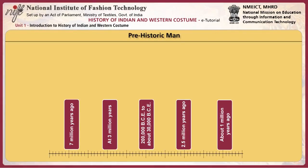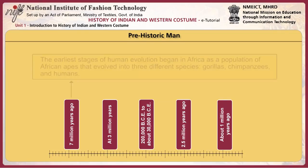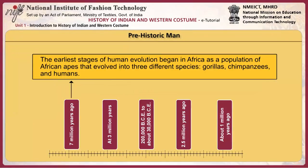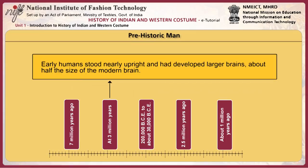Prehistoric man evolved over a period of 7 million years. The earliest stages of human evolution began in Africa as a population of African apes that evolved into three different species: gorillas, chimpanzees and humans. Early humans stood nearly upright and had developed larger brains, about half the size of the modern human brain.